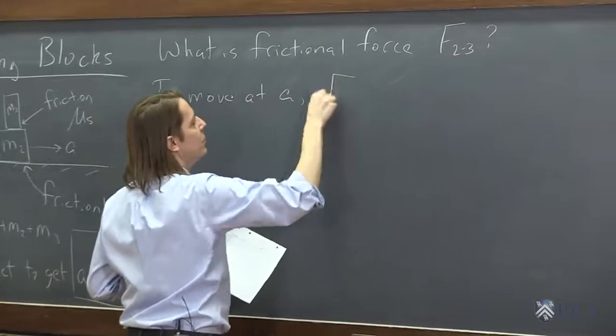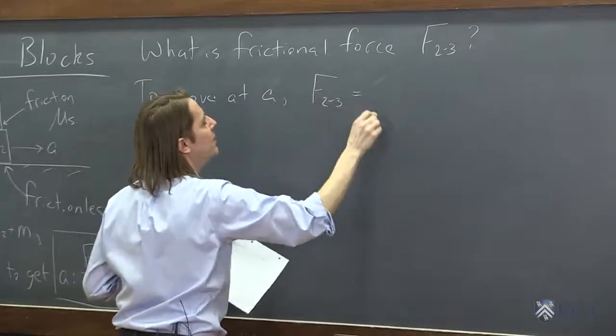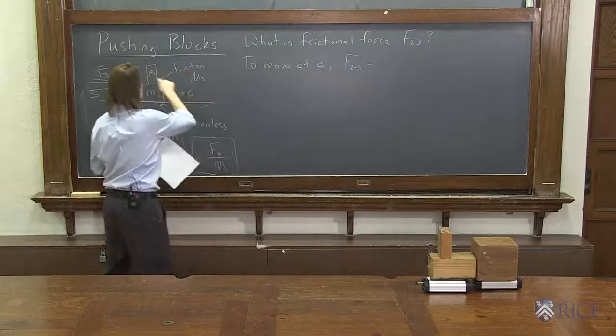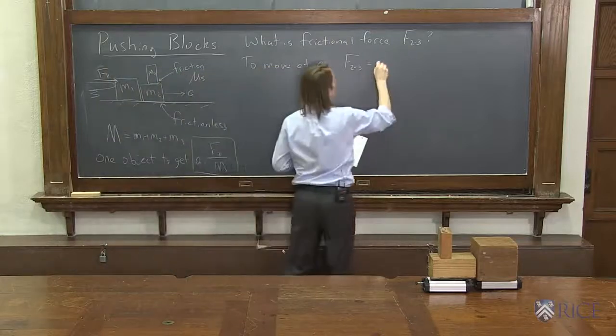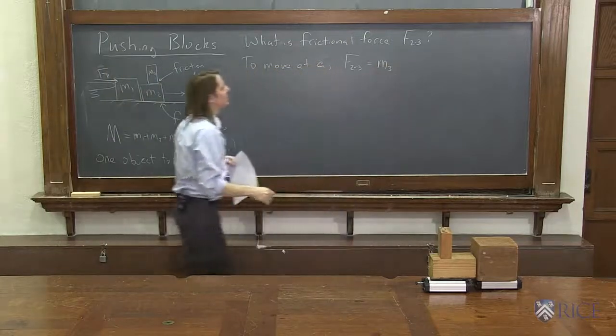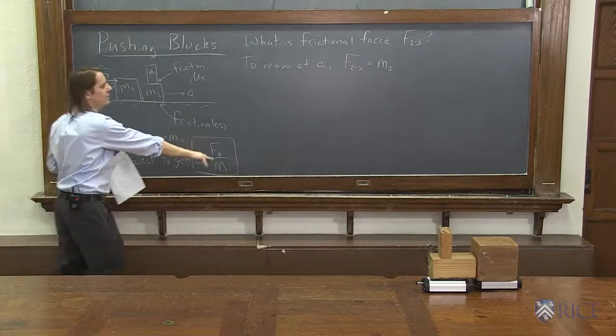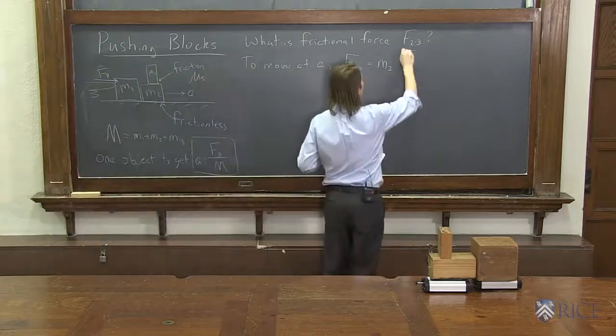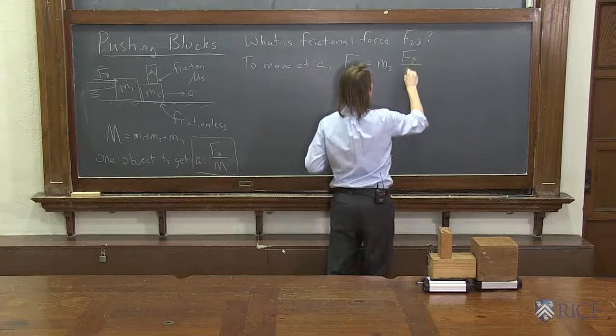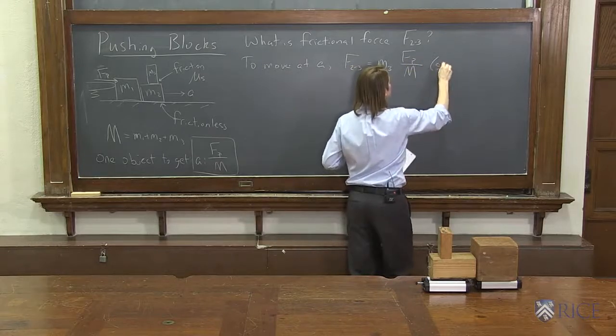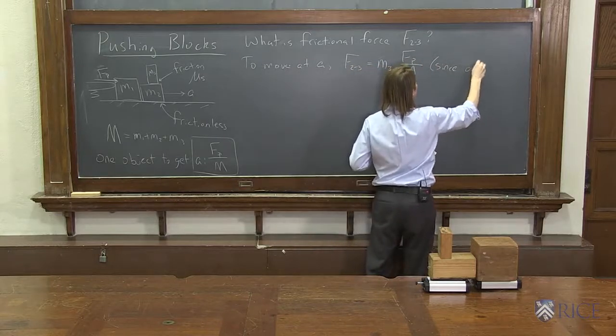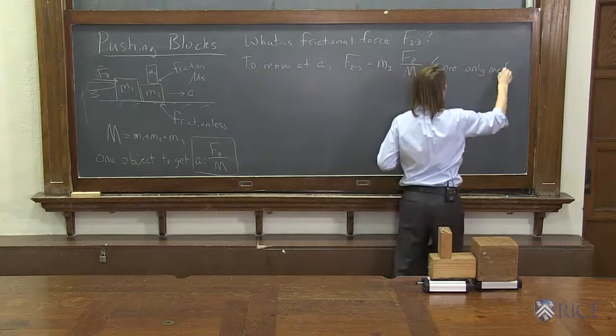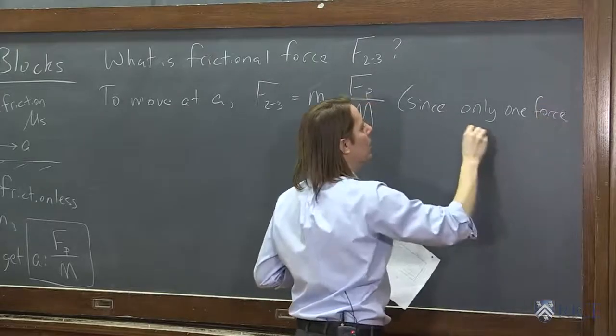...it must be that the force of 2 on 3 equals the mass, which is M3, times acceleration, which we already have here. Fp over big M, since there's only one force on 3.